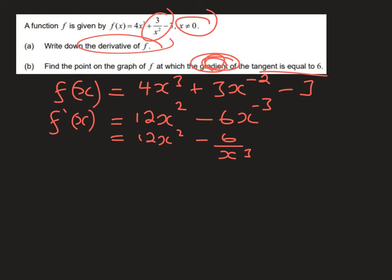So in order to do this, you're going to take your gradient function, which is 12x² - 6/x³, and you're going to set that equal to the gradient, which is 6. Now you're going to have to solve that using your graphic display calculator. And if you do that, you will end up with coordinates of (1, 4).